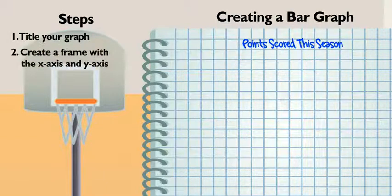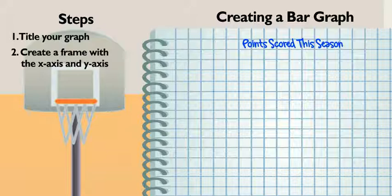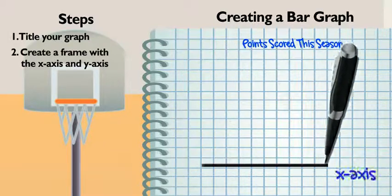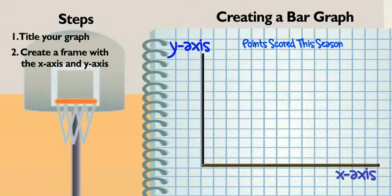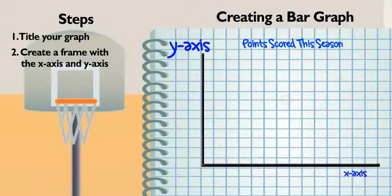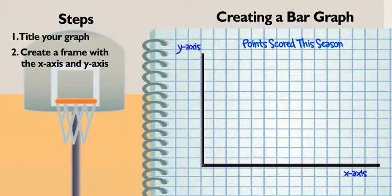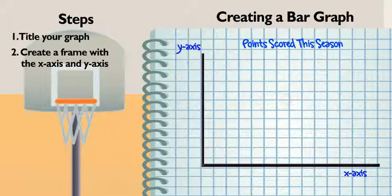We'll get to that, but first, your graph needs a frame. Like a painting? Sorta. This frame has only two sides, and they're called the X and Y axis. The X axis is horizontal, on the bottom, and the Y axis goes vertically, on the left. Okay. Now we're getting somewhere.